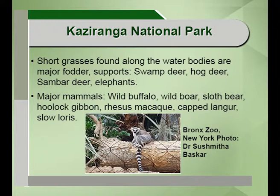The major mammals found in the Brahmaputra basin include the wild buffalo, wild boar, sloth bear, gibbon, rhesus macaque, capped langur and slow loris. Top predators include the Indian tiger and the Indian leopard. Aquatic mammals include the Indian otter and the Gangetic dolphin, which is a highly endangered organism often featured in media to raise awareness about protecting endangered species.